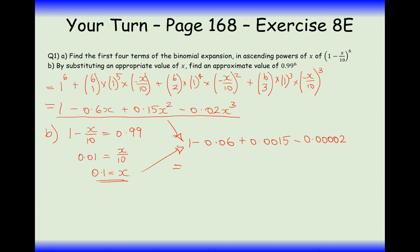And let's simplify all of this together, and we get 1 minus 0.06, add 0.0015, take away 0.000002, and we get a final answer here of 0.94148, by substituting in x equals 0.1.